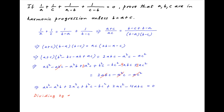Now divide by abc, so this becomes b upon c minus a upon c plus 2 plus b upon a minus c upon a plus 2c upon b minus 4 is equal to 0.